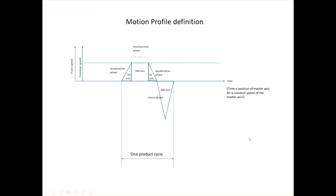Here we can see a velocity profile. There are two axes on the left — the X-axis speed and the conveyor speed — and you can see that for 500 millimeters of travel they need to match to create the perpendicular line. We also have defined an acceleration distance and deceleration distance, the total of which is 600 millimeters in the direction of the conveyor. To return the X-axis carriage to its beginning position we must move backwards 600 millimeters in the return phase. That defines our X-axis motion.